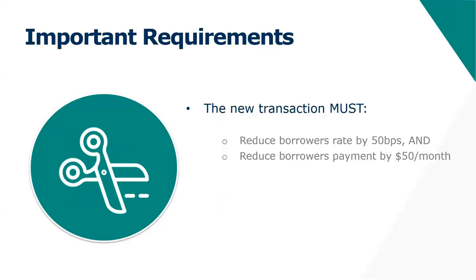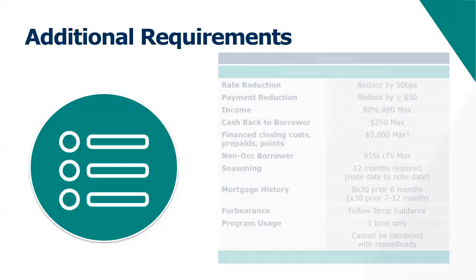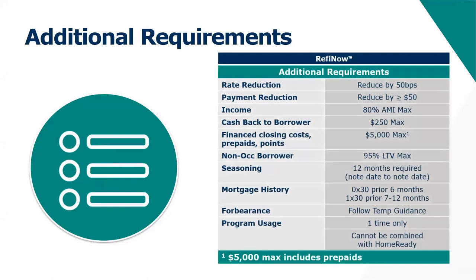There are some other important requirements. Your new transaction must reduce the borrower's interest rate by at least 50 basis points, and it must also reduce the borrower's payment by at least $50 a month. That $50 reduction in payment can be accomplished through principal and interest or mortgage insurance.